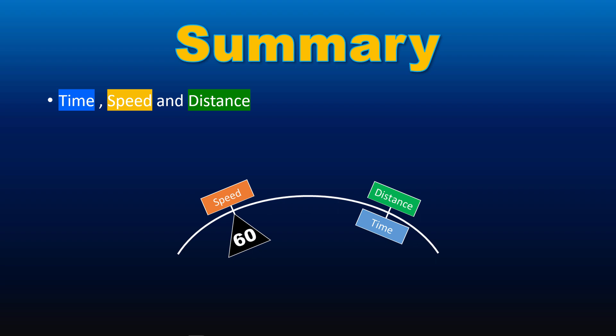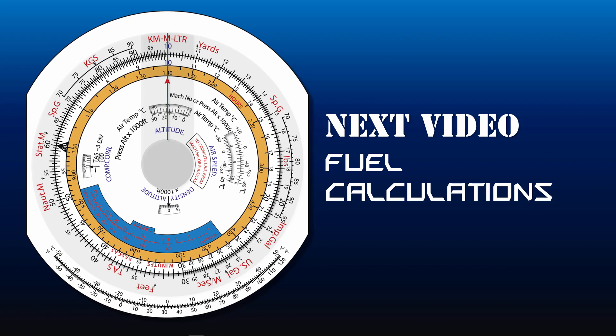To summarize, for all time, speed and distance problems, the arrangement of the variables on CRP5 is always the same. Speed on the outer scale opposite to the 60 index on the inner scale, and distance on the outer scale against time on the inner scale. In the next video in this video series, we will discuss fuel calculations.